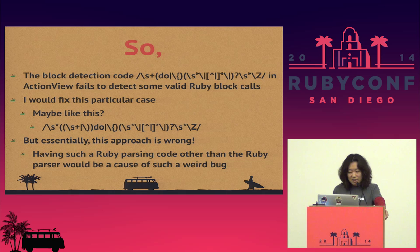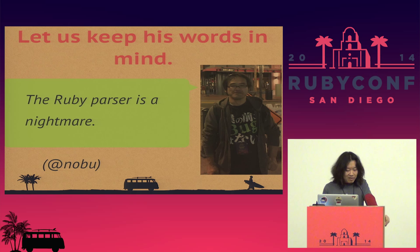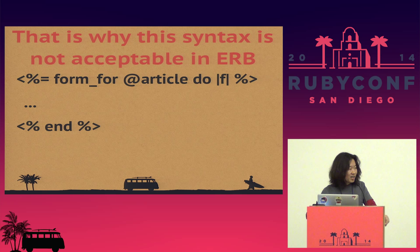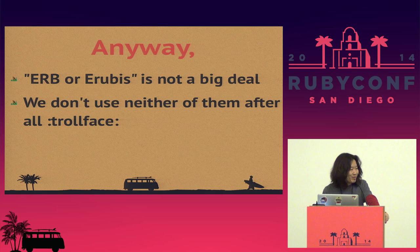That is why this syntax is not acceptable in the standard ERB. Now you see how ERB works and the difference between ERB and Erubis. But the difference between ERB and Erubis is not a big deal, because we don't use either of them anyway. Our choice is, of course, Haml.